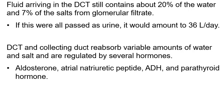Starting with about 180 liters of filtrate and going through the proximal convoluted tubule, loop of Henle, and distal convoluted tubule, you'd still have about 36 liters of urine if you stopped there. The collecting ducts will pull out a whole bunch more water. There are also hormones that directly affect the collecting duct: aldosterone, atrial natriuretic peptide, anti-diuretic hormone (ADH), and parathyroid hormone.